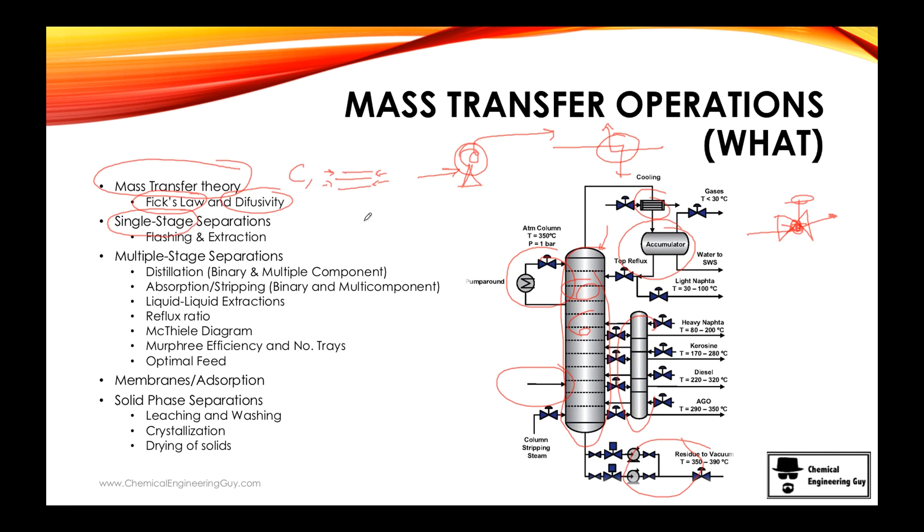Now we start with the most basic one, which is single-stage separations. As the name implies, it's one stage. This is a flash. We have a feed, we bring it here, we let the liquid settle and the vapor to go out. And you get a very rich vapor and a very rich liquid. So that's the first stage.